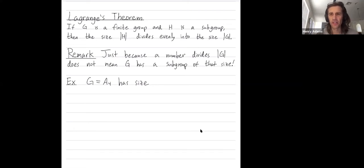The converse might be, well, if I have a group and 5 divides into it evenly, into the size of that group evenly, do I necessarily have a subgroup of size 5?